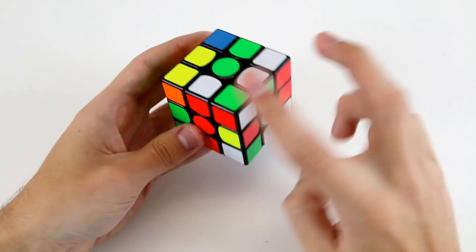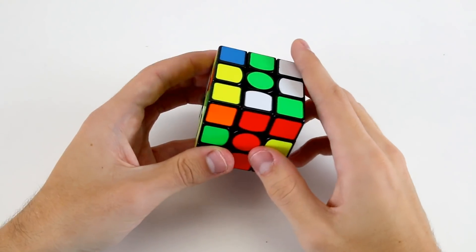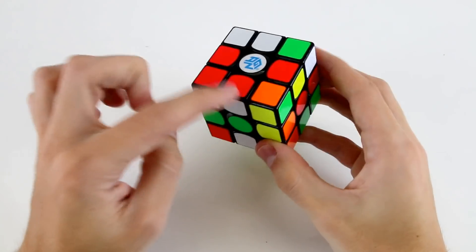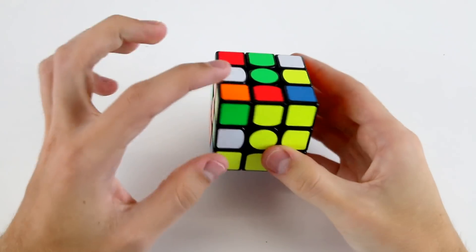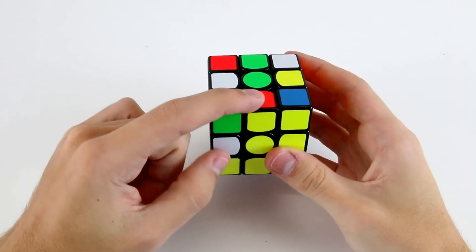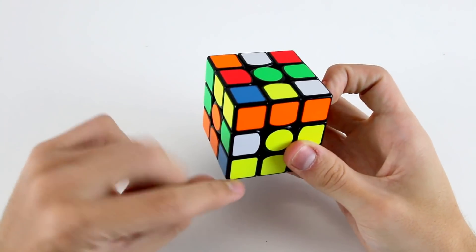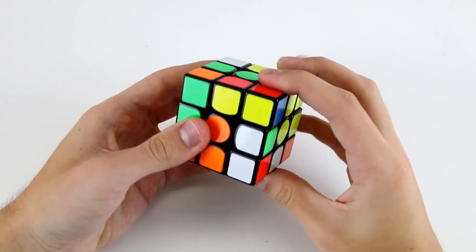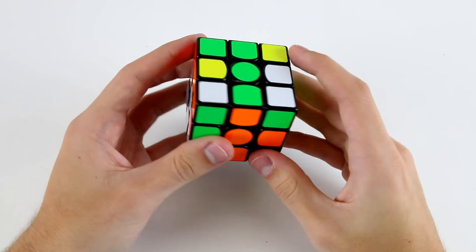Now for my first F2L pair I'd probably go for these two so I might rotate like this, pair them up and insert them into the back. Then I've got a few different options. I can go for these two next probably so I would take out the corner like that, set them up, rotate again, insert them into the back right slot there.